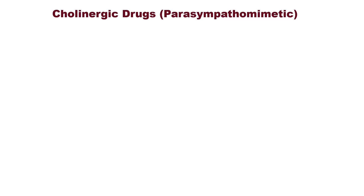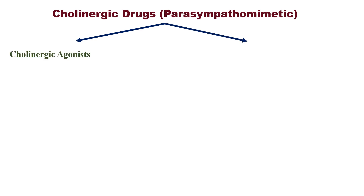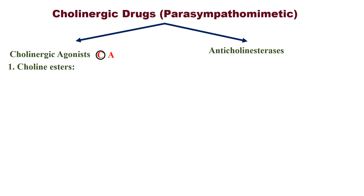Cholinergic drugs or parasympathomimetics are classified into cholinergic agonists and anti-cholinesterases. In cholinergic agonists, 'cholinergic' starts with C and 'agonist' starts with A — so C stands for choline esters and A stands for alkaloids.